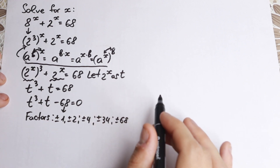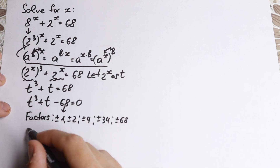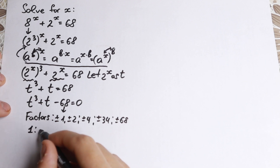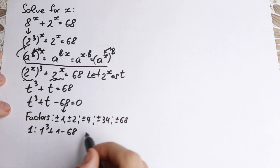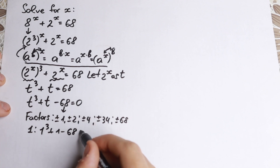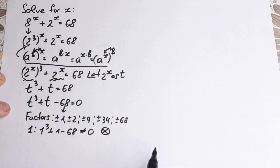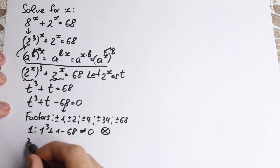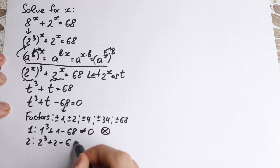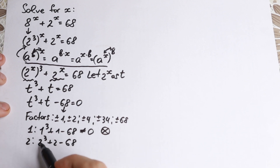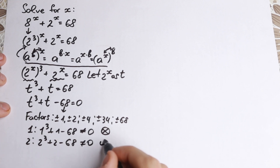Let's try the positive factors, starting with 1. So 1 cubed plus 1 minus 68 — it's not equal to 0, so we reject this factor. Let's go with 2: 2 cubed plus 2 minus 68 gives 8 plus 2 is 10, minus 68 — not equal to 0, so we reject this factor.